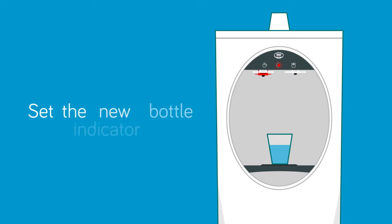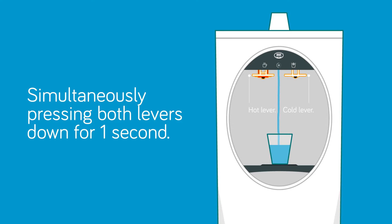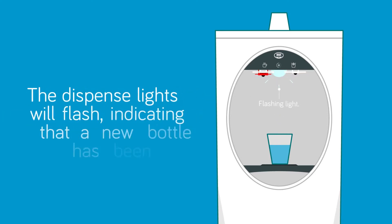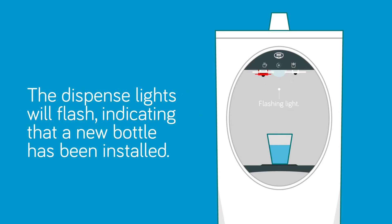Lastly, reset the red indicator light by simultaneously pressing both levers down for one second. The dispense light will flash indicating that a new bottle has been installed.